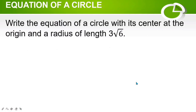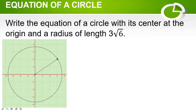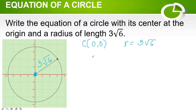Let us proceed to the next problem: write the equation of a circle with its center at the origin and a radius of length 3 square root of 6. Again, the center of the circle is at the origin, with coordinates (0, 0), and the radius is 3 square root of 6, so r = 3√6. When the center is at the origin, we use the center-radius form: x squared plus y squared is equal to r squared.